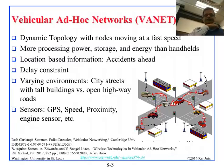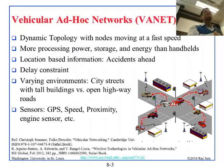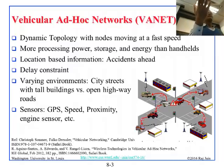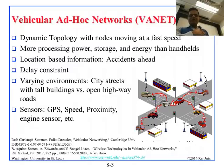Vehicular Ad Hoc Networks — basically the idea is that soon cars will be able to talk to each other and communicate. The main reason is that you would be able to get information just like what you get on your smartphone — driving directions, restaurants, and things like that — in the car. VANETs will allow cars to talk to cars, and cars to talk to the rest of the world.